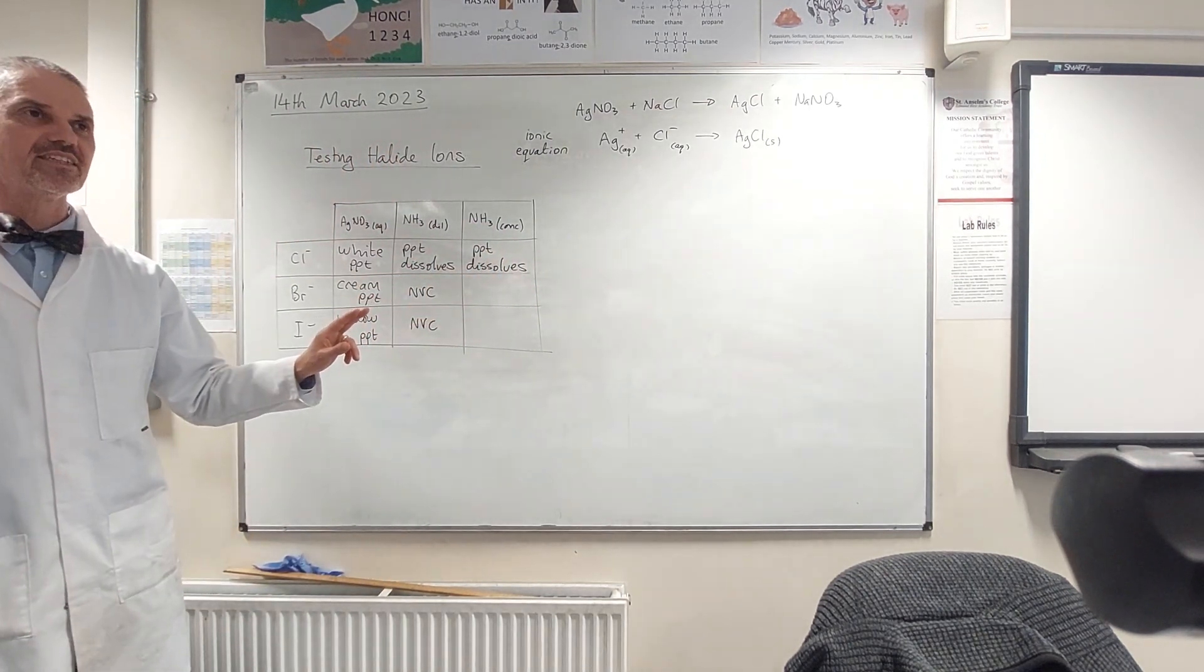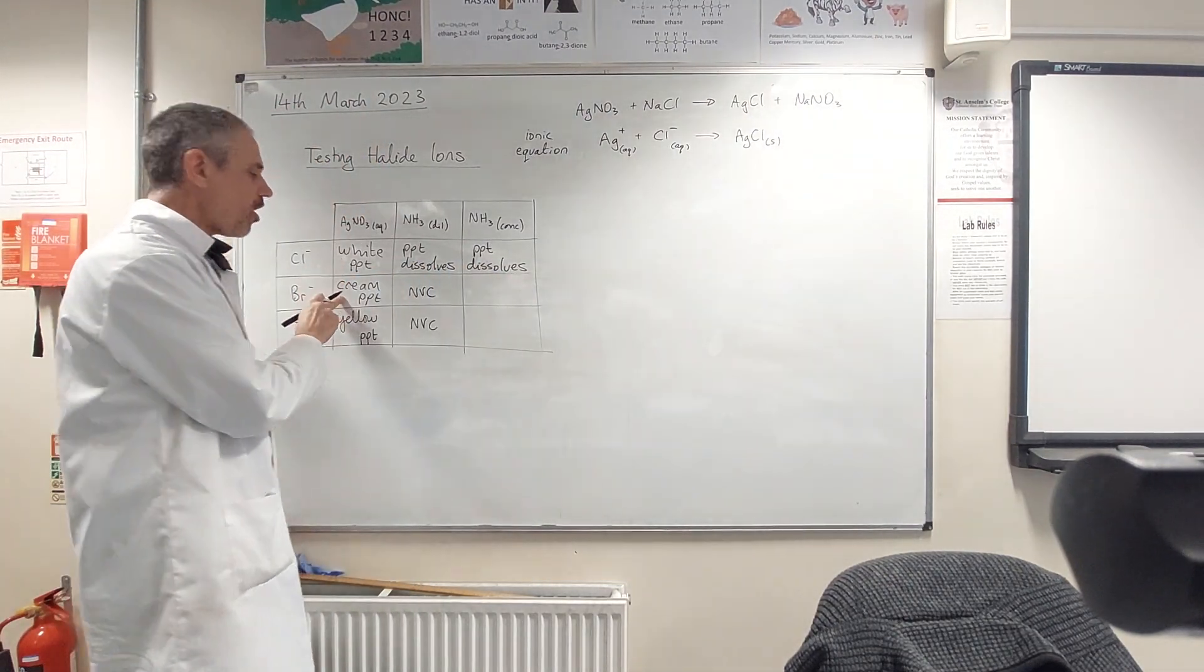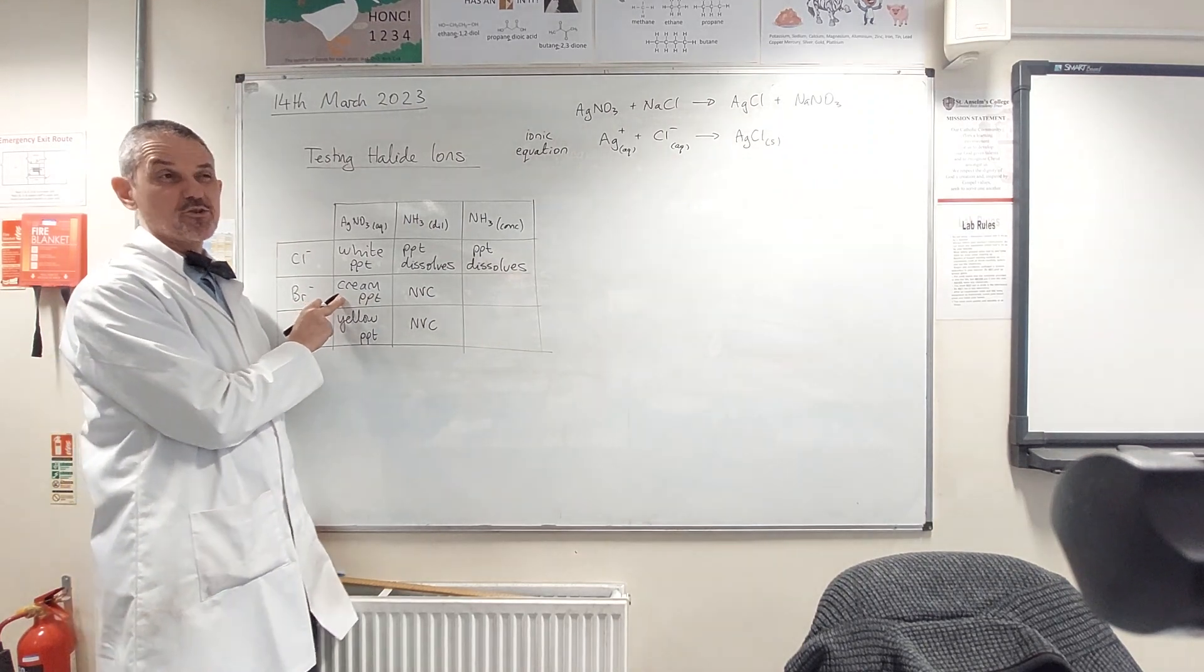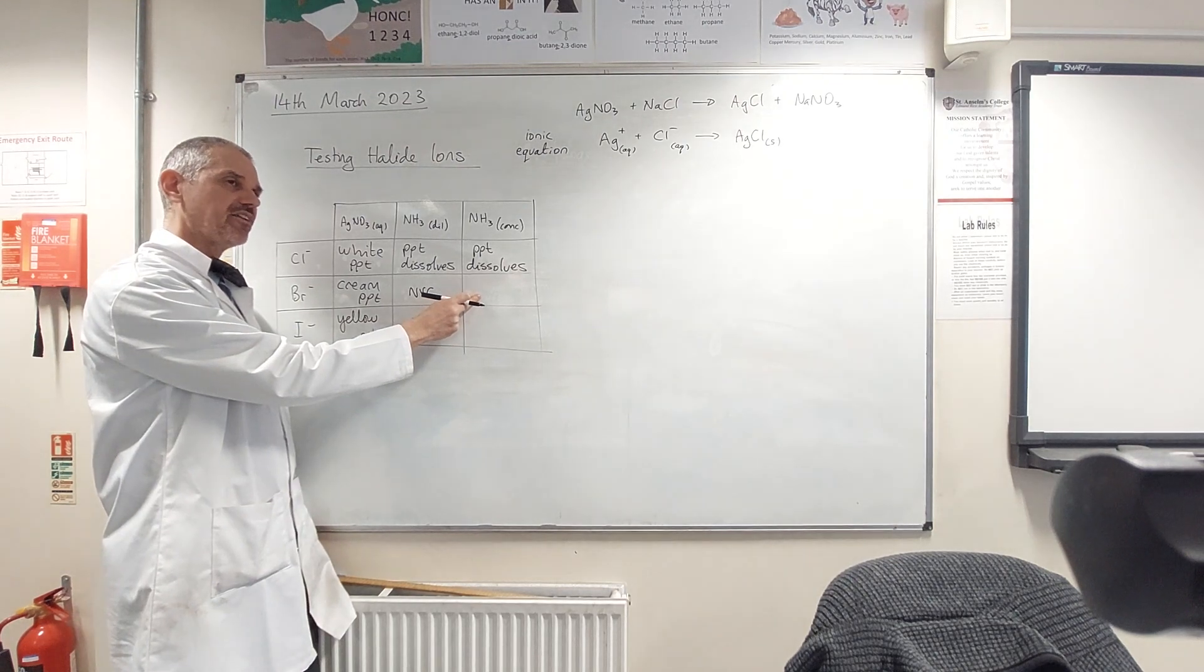What happens with bromide? We've already got a white precipitate. Sorry, we've already got a cream precipitate. We're adding the cream precipitate to conch ammonia.